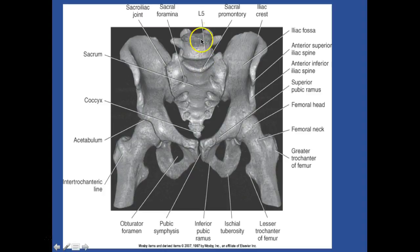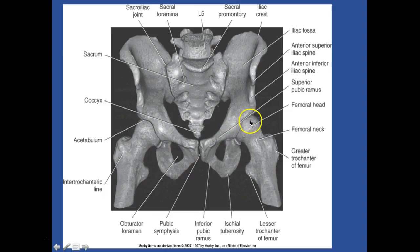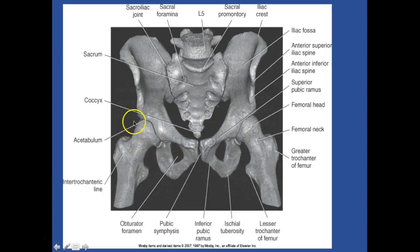Starting at L5 here with your sacral promontory - that's the part that sticks the most anterior. You have your iliac crest, your iliac fossa, your anterior superior iliac spine, your suprapubic ramus, femoral head, femoral neck, greater trochanter, lesser trochanter, ischial tuberosity, inferior pubic ramus with your pubic symphysis, your obturator foramen, your intertrochanteric line with your acetabulum, your coccyx, your sacrum with your SI joint, and your sacral foramina as the holes there.